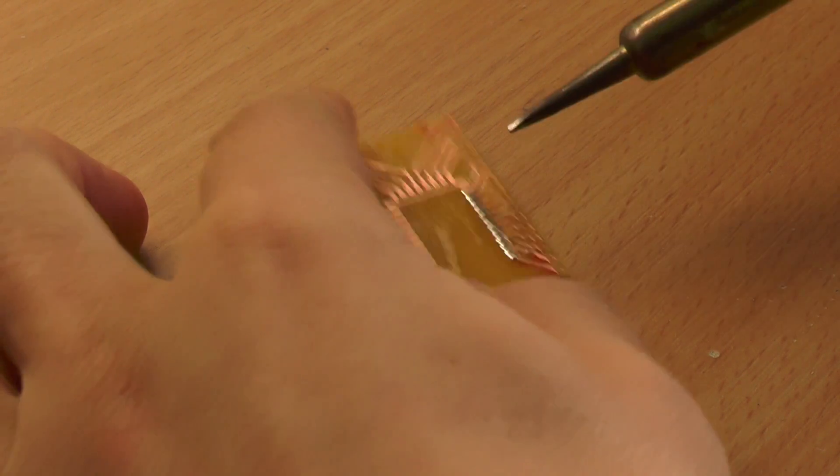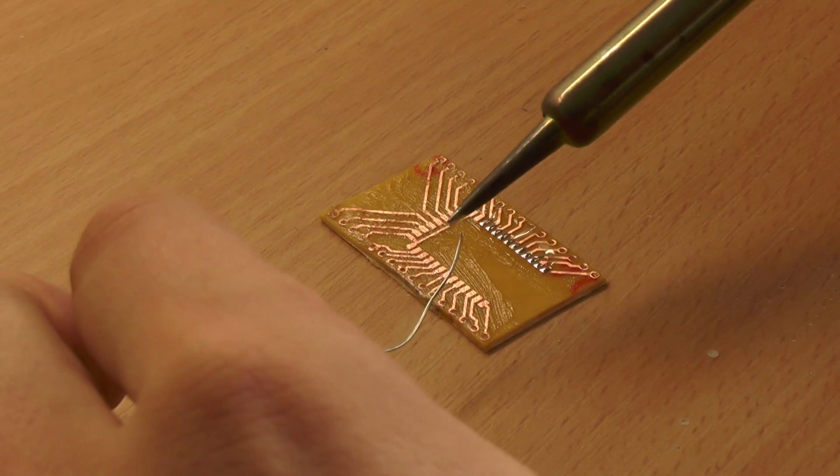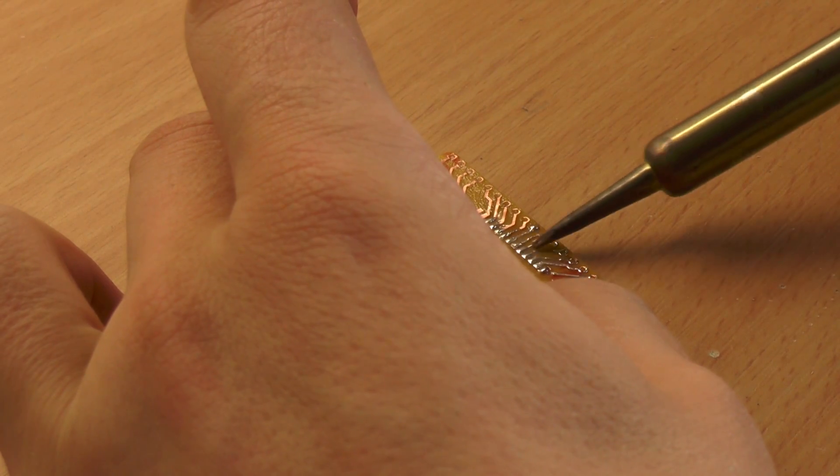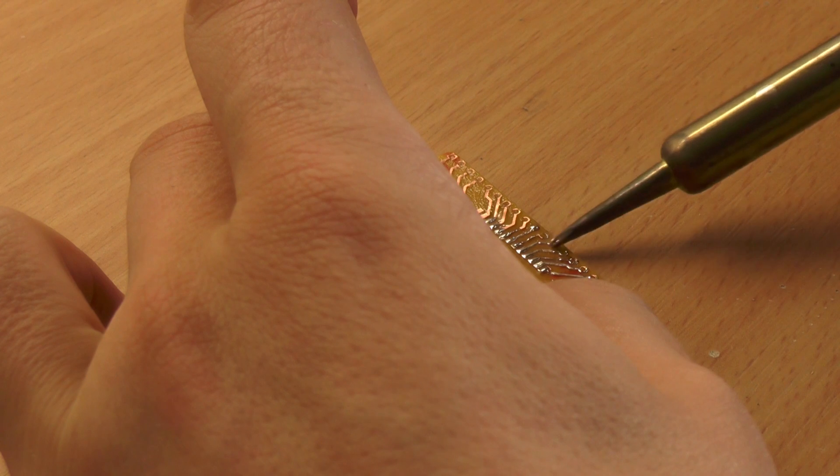To protect the copper from oxidation I pre-tin the whole board by taking a bit solder on the tip and dragging it along the traces.